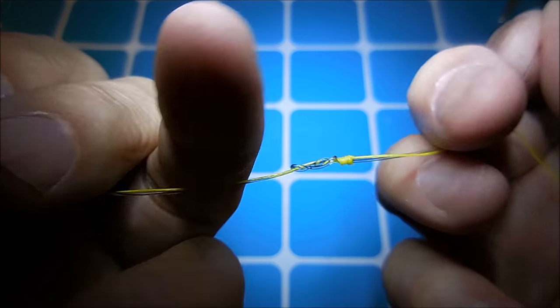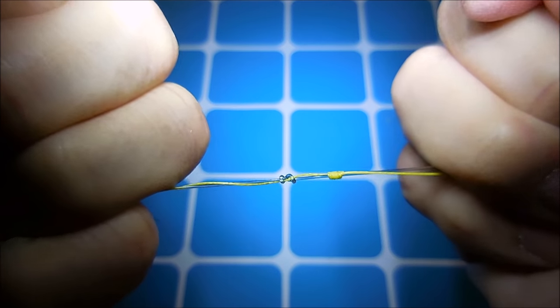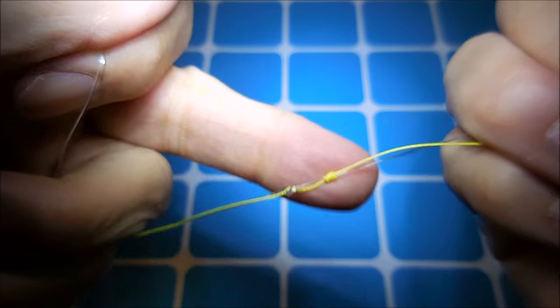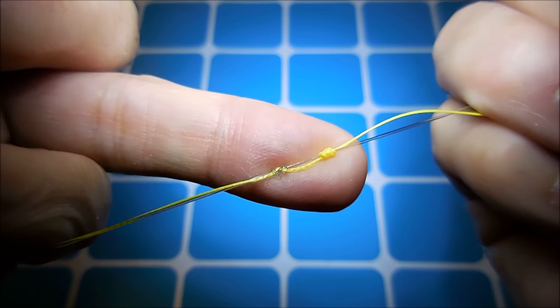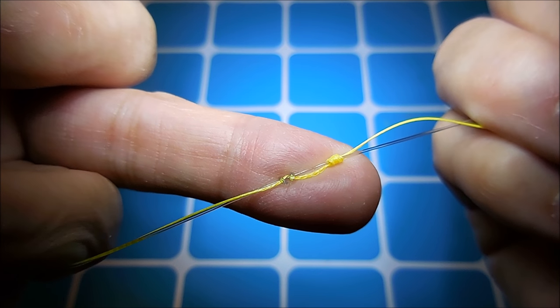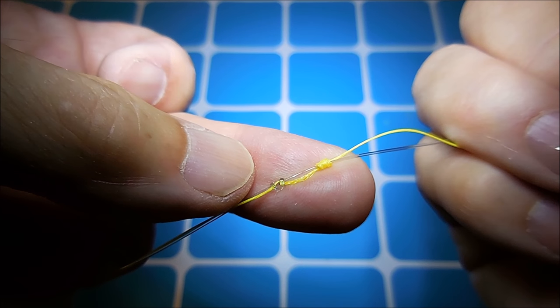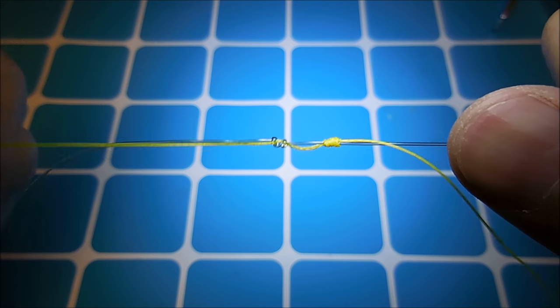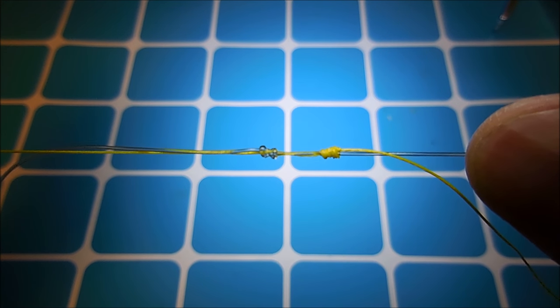Then tighten the figure eight by pulling both ends of the mono. Now you can pull tight on the long ends of the braid and the mono so the two knots come together tightly.